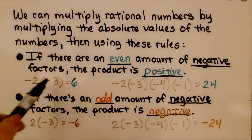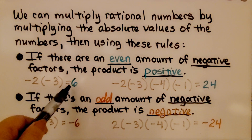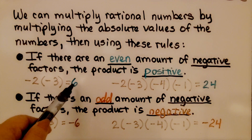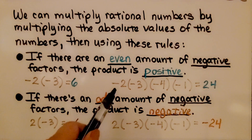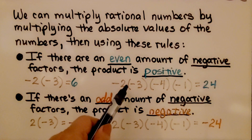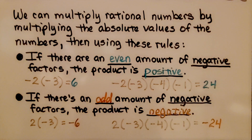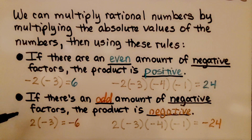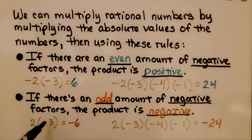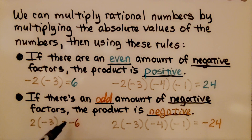We have two negative factors — we have a positive product. We have four negative factors — we have a positive product. If there's an odd amount of negative factors, the product is negative. Here we only have one negative factor; that's an odd amount of negative factors, so we have a negative product.